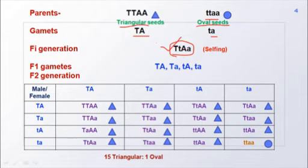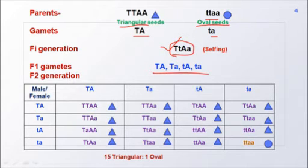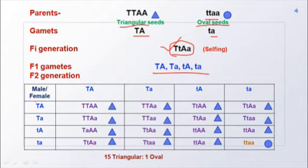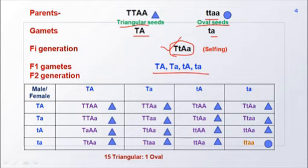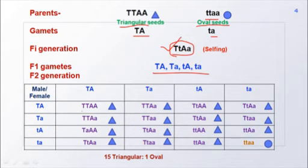The F1 generation gives rise to four types of gametes when selfing is carried out. These gametes are very similar to those in a standard dihybrid cross, but the phenotypes they produce are very different. When male and female gametes are crossed, they produce 16 types of offspring, and 15 of these contain triangular seed-shaped capsules while only one produces oval-shaped capsules.